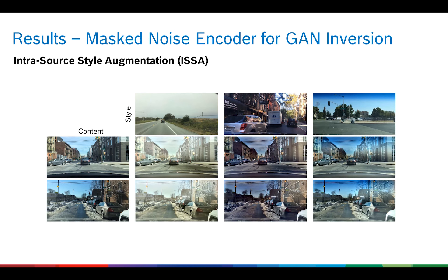Further, we utilize the mask noise encoder for intrasource style augmentation. As shown here, the semantic content is not modified, ensuring alignment with the ground-truth label map. Meanwhile, style mixing augments the training data and reduces spurious correlations.